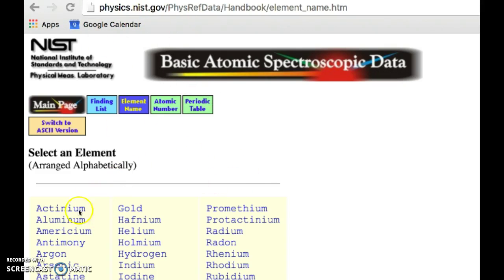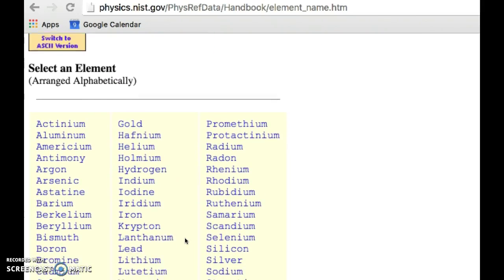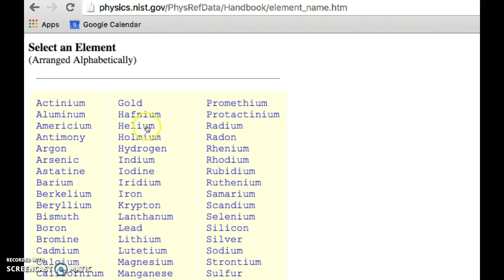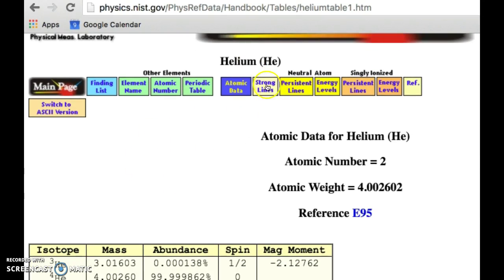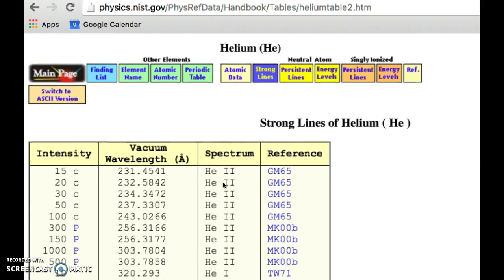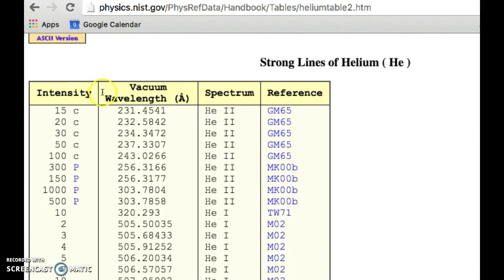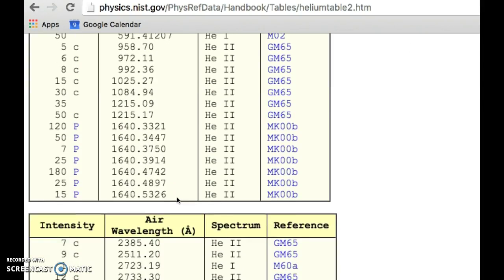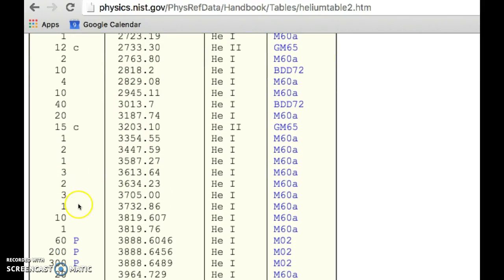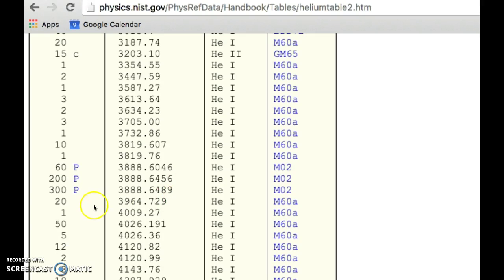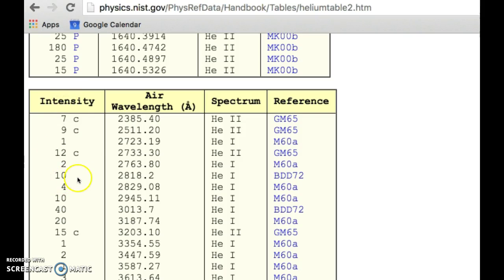Real quick, this is what the NIST website looks like. And you can see here at the bottom, there's all of the elements that could generate lights listed here. So for example, if I'm working with helium, I'm going to click on that, and then it shows me helium, and then I want to find my strong lines. And then, since I'm making my measurement in air, I'm not going to choose vacuum, and I'm going to scroll down here to air. And this is listed in angstroms, which is 10 to the minus 10 meter. So to go to nanometer, you have to divide all these numbers by 10.